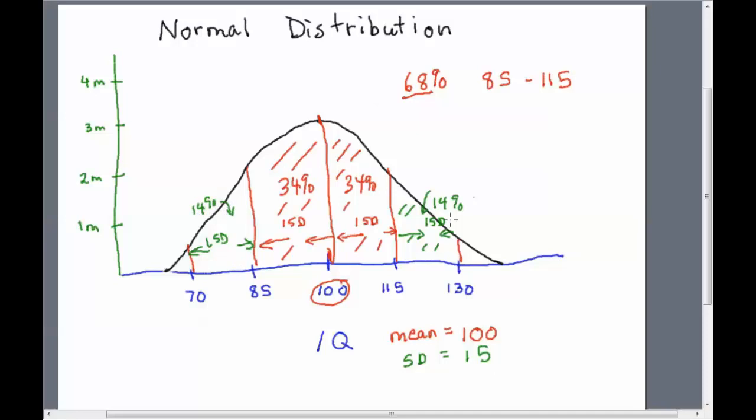So if you add it all up, I have 68% plus, well, 14 plus 14 is 28. You add that all up, and that's 96%. 96% of the population, that means all the people from here all the way over to here, and all the shaded region in here, have a score from 70 to 130.